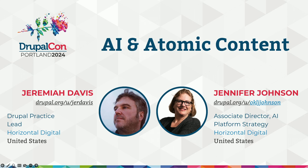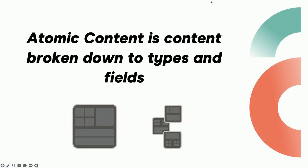I want to start with a question: do people know what atomic content is? It's sort of bread and butter to what Drupal does. It's basically content that is structured by content types and fields so that we can make those fields actionable. We've built out 12 or 13 different use cases using AI and Drupal, but there's one in particular I want to focus on.